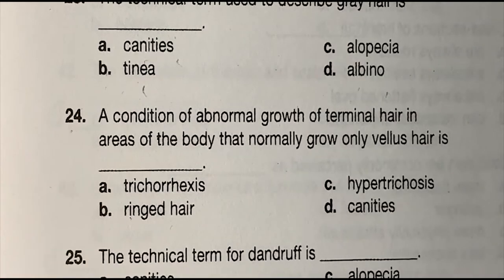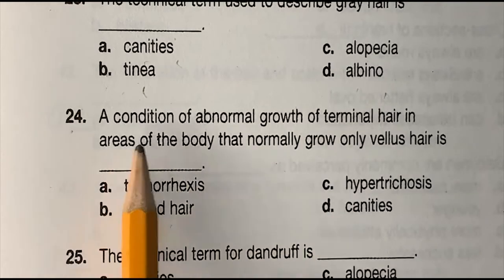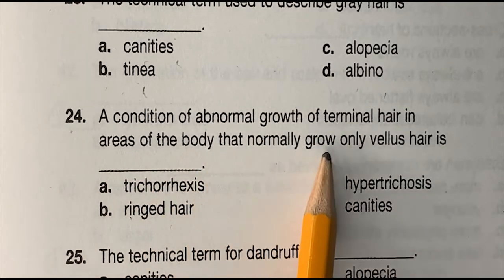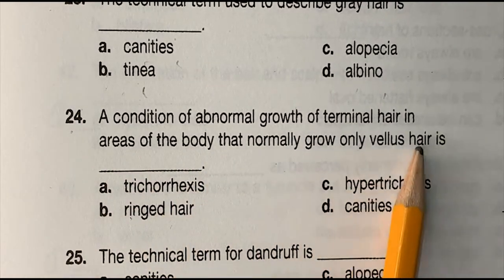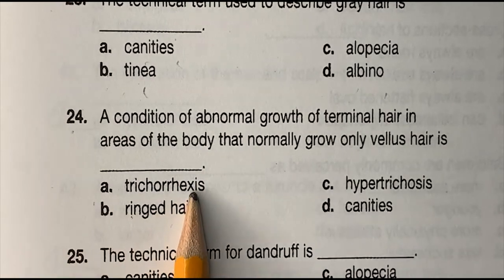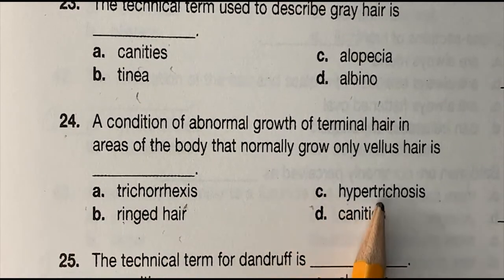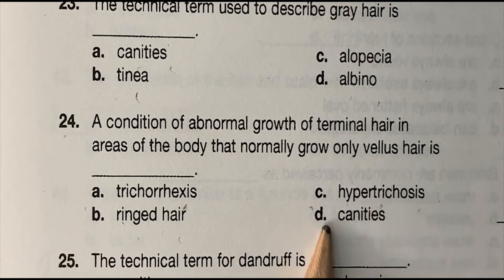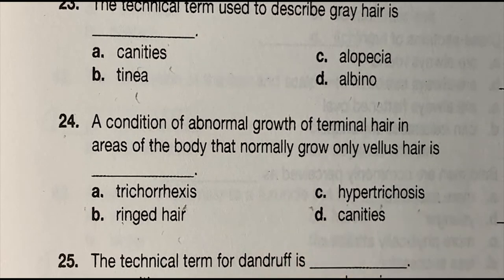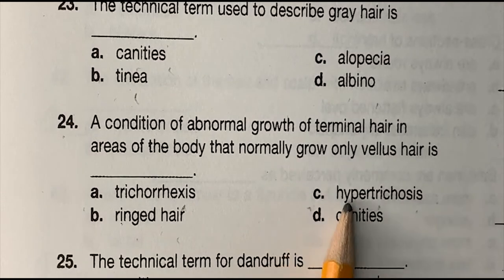Number 24: a condition of abnormal growth of terminal hair in areas of the body that normally grow only vellus hair is blank — (a) trichosis, (b) ringed hair, (c) hypertrichosis, or (d) canities. The correct answer is (c) hypertrichosis.